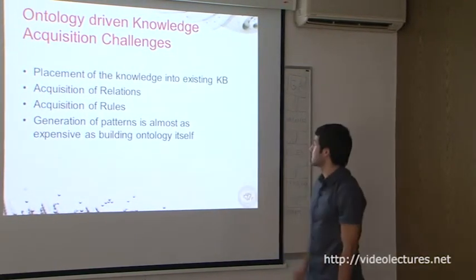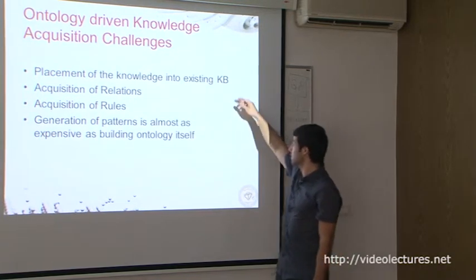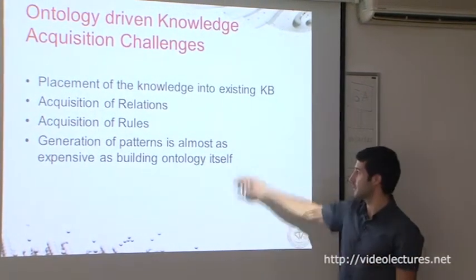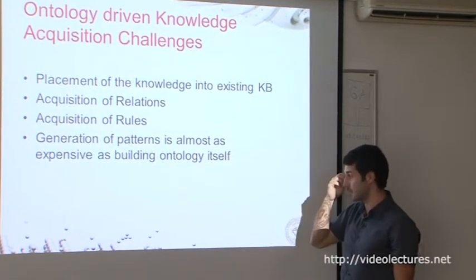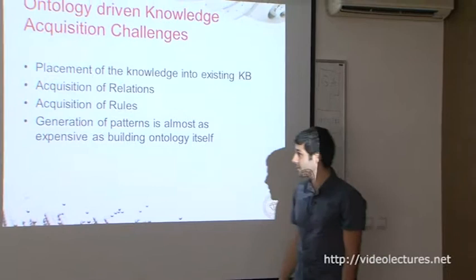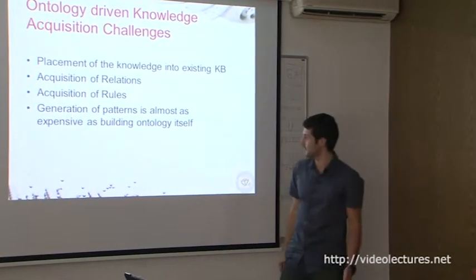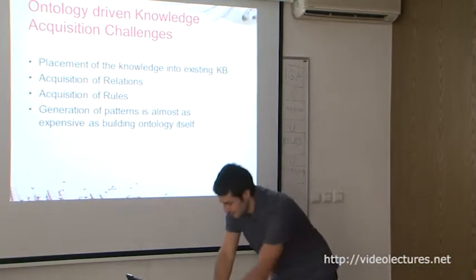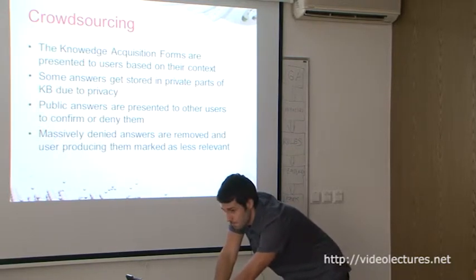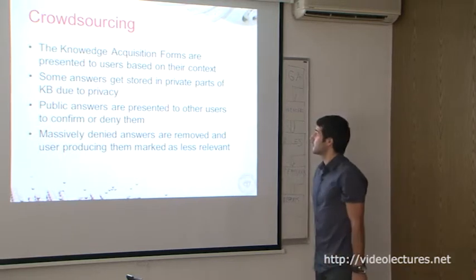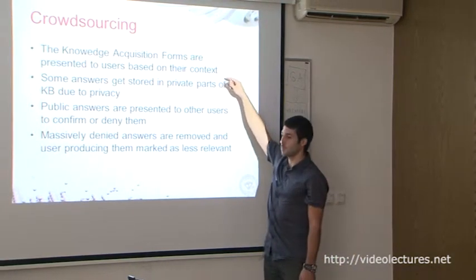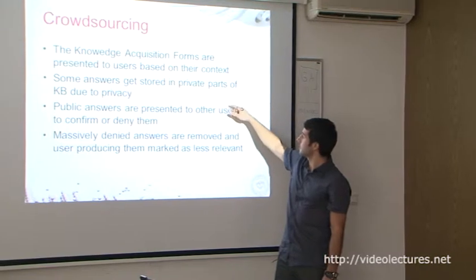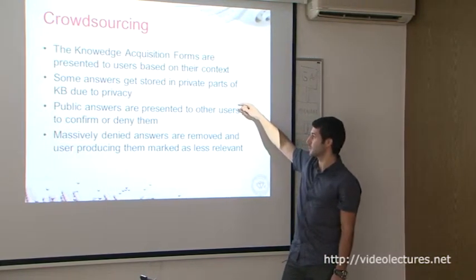These are the challenges for knowledge acquisition: you don't know where to put existing knowledge, it's hard to get relations and rules, and the patterns which generate natural language — if you want a lot of these patterns, it's expensive, almost similar to building an ontology. If the patterns could be figured out automatically it would help a lot. For crowdsourcing: these forms or questions are presented to users based on their context, location, and the previous conversation. We don't store everything into the main knowledge base — some parts are separated because of different beliefs and privacy. Public answers are shown to other people, and they have to confirm or deny them.